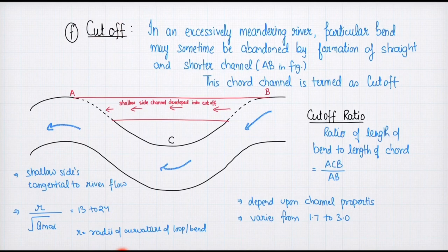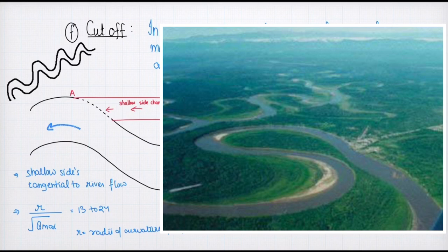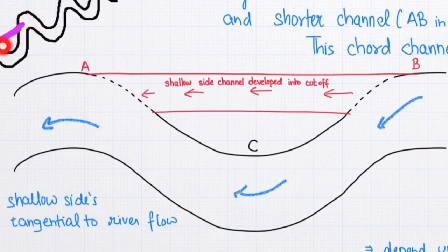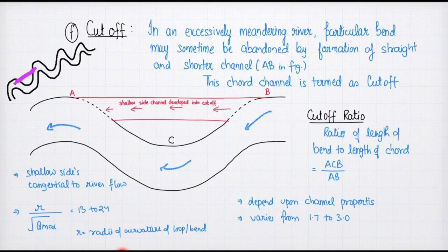Finally, we have cutoff. Because of excessive silting and scouring, meanders are formed at very short distances. Instead of following the meander path, the water takes the shortest path, abandoning the meander formation — this is called a cutoff. The cutoff ratio is the ratio of the length of the bend to the length of the chord, where the length of the bend is the meander path length and the length of the chord is the cutoff length.